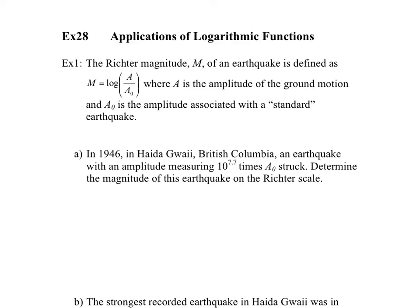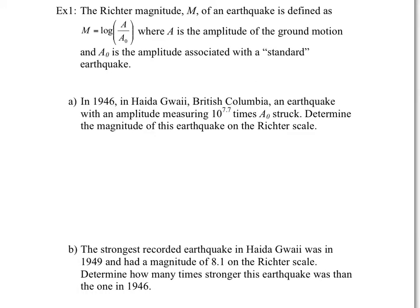When we say standard earthquake, it's just the normal movement of the earth. In 1946 in Haida Gwaii, British Columbia, an earthquake with an amplitude measuring 10 to the power of 7.7 times the normal earth movement struck. So that means the earth moved this much more than average. We need to determine the magnitude on the Richter scale. So we have m equals log of 10 to the power of 7.7 times a0, divided by a0. Notice a0 cancels out, so we have m equals log of 10 to the power of 7.7.